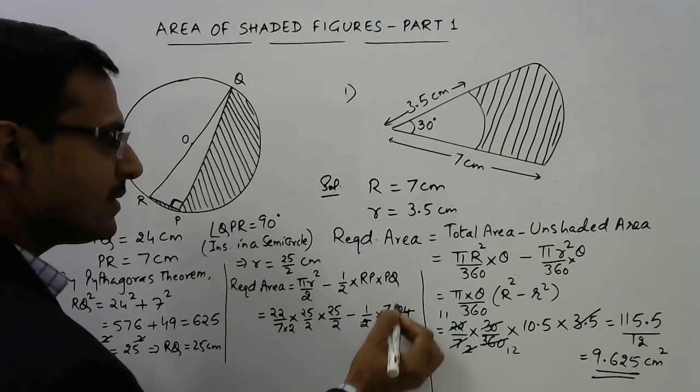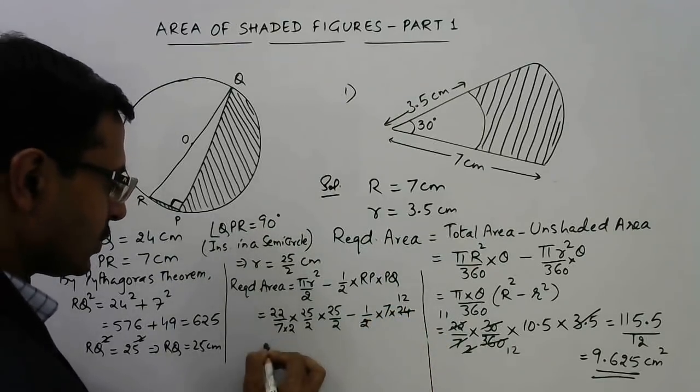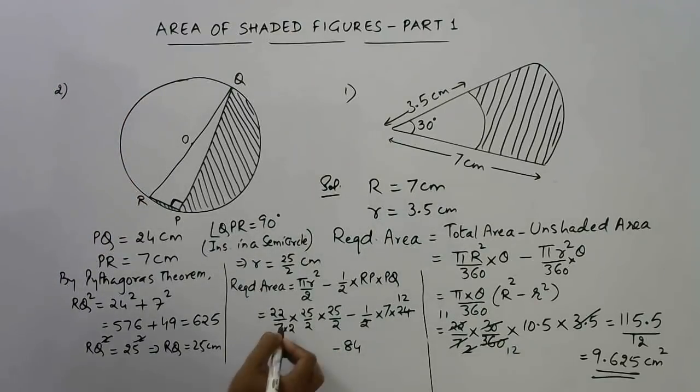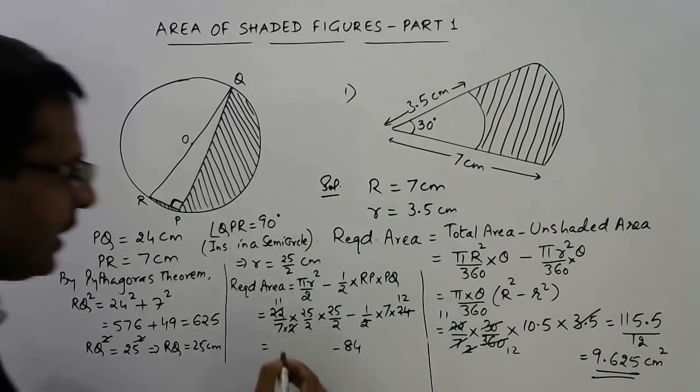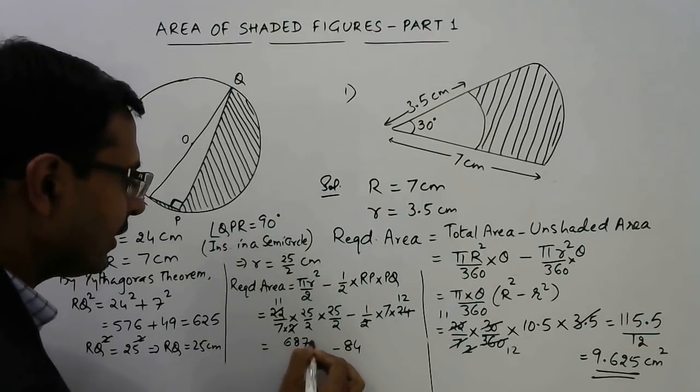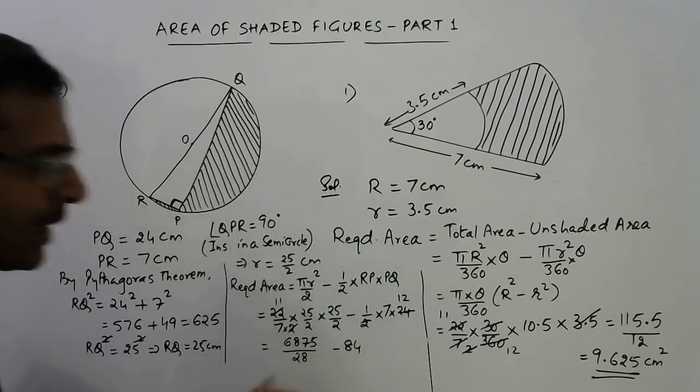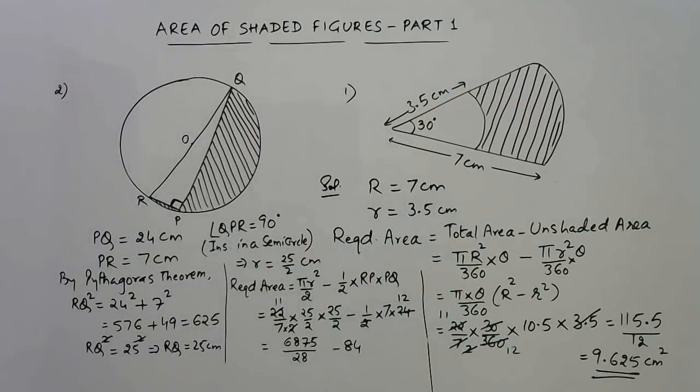Here this part is very easy - this is 1/2 × 7 × 24 = 84. So this comes out to be something minus 84. If you solve this, 2 also gets cancelled by 11. Now you need to multiply the numerator and the denominator separately. You will get 6875 in the numerator and in the denominator we have 7 × 4 = 28.